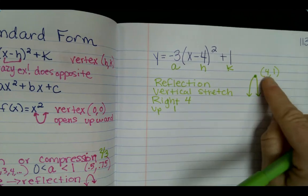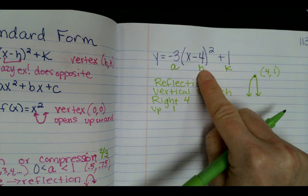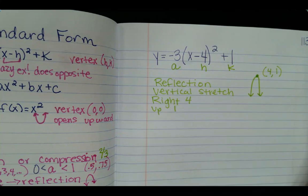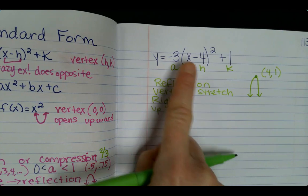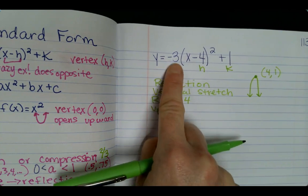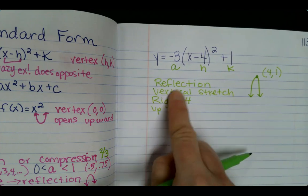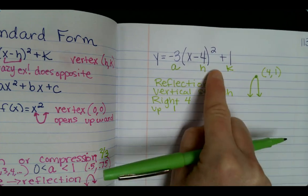So these are all the pieces that you will put for a problem like this. We had all the different transformations: reflection because of the negative, vertical stretch because of the 3, right 4 because it's minus 4, up 1 because it's plus 1. And we have one more.